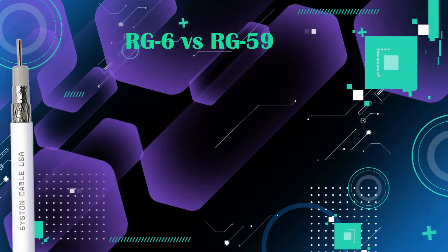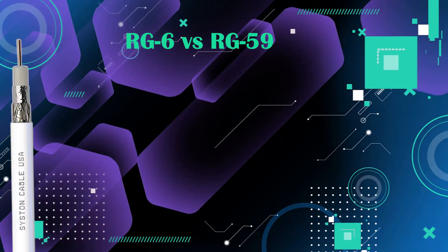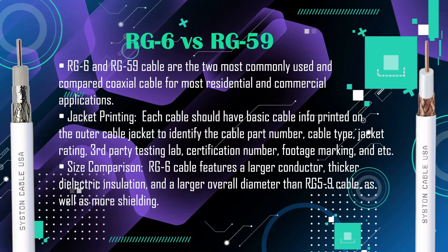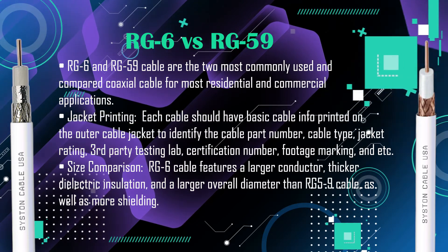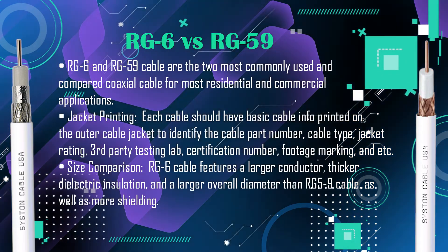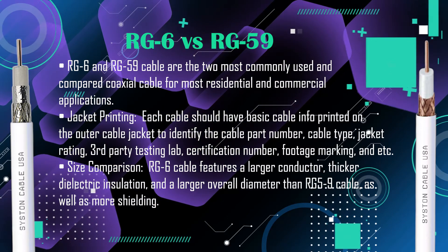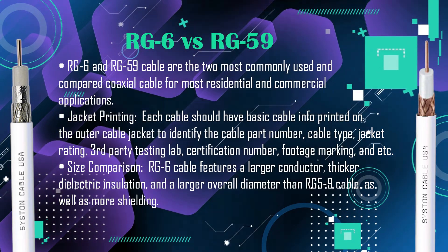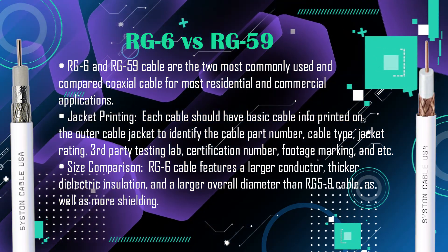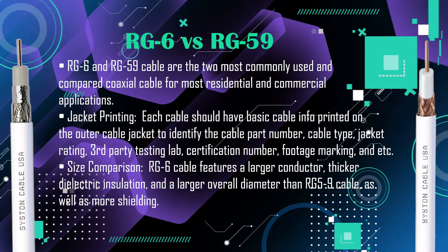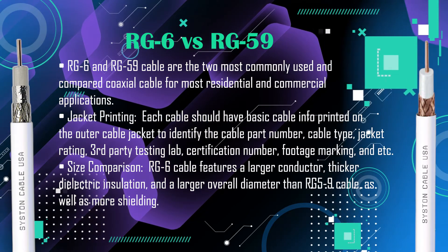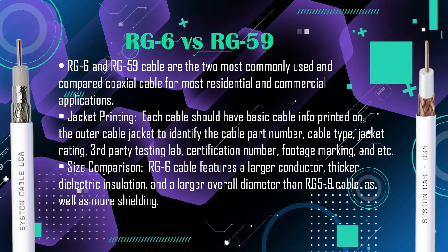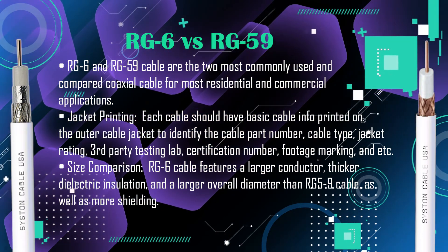Basic differences between RG6 and RG59: RG6 and RG59 cable are the two most commonly used and compared coaxial cables for most residential and commercial applications. Jacket printing: each cable should have basic cable info printed on the outer cable jacket to identify the cable part number, cable type, jacket rating, third-party testing lab certification number, footage marking, and other info.